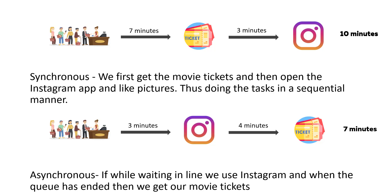But what would an asynchronous — or normal — person do? He would wait in line and while waiting, he'd like pictures on Instagram. That takes three minutes. Since he's already waited three minutes in line, he only needs four more minutes to get his tickets — seven minutes total. That's how asynchronous programming saves time.